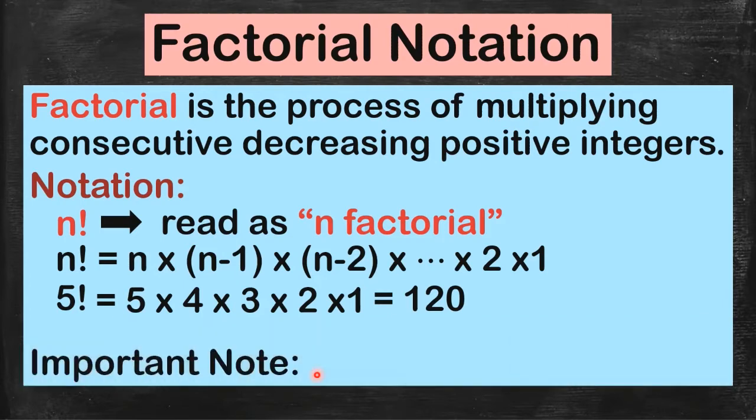Lastly, we have an important note here. Do not forget that 0 factorial is equal to 1. It's a definition. Do not forget that. Of course, 1 factorial is also equal to 1. Let's try some examples, and try not to use a calculator here.